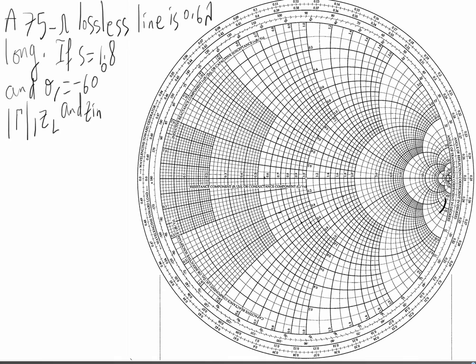It's a 75 ohm lossless line that is 0.6 wavelength long. S, or VSWR — different books use different variables for it — is the voltage standing wave ratio of 1.8, and a reflection angle of minus 60 degrees. We need to find using Smith's chart: the reflection coefficient magnitude, the load impedance, and Zin, which is the input impedance.